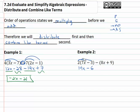Recall, if there's no number in front, we assume that means there's a 1. This means we're multiplying by negative 1. Negative 1 times 8x is negative 8x, and negative 1 times 9 is negative 9.